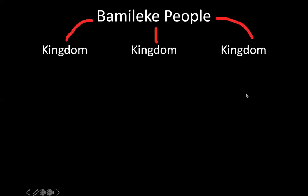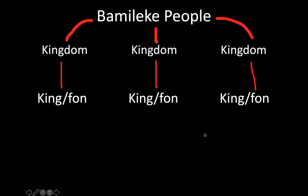I want you to draw a little family tree — I'm a very visual person and this helps me visualize what I'm talking about. Write at the top 'Bamalik people.' The Bamalik people would have individual kingdoms within their group. Each kingdom had a king.